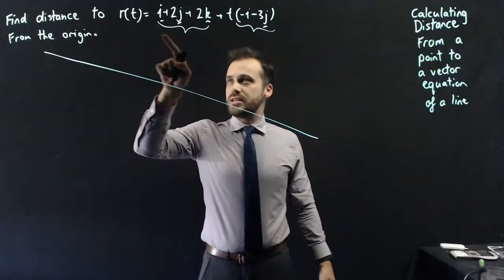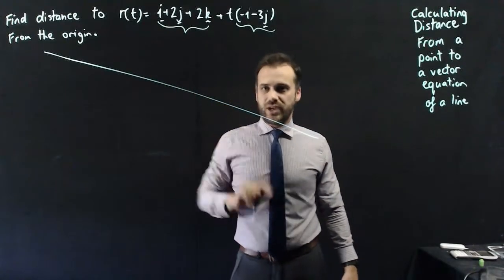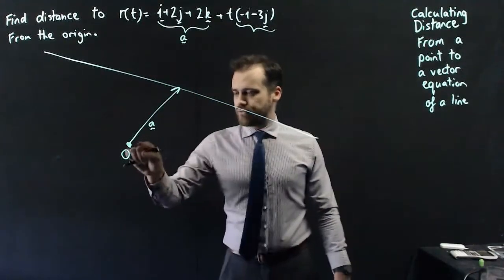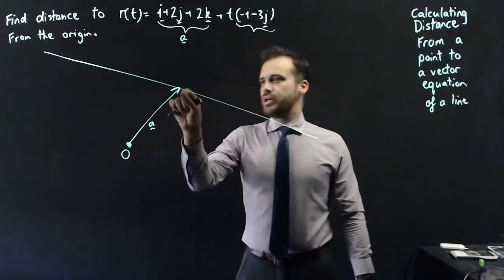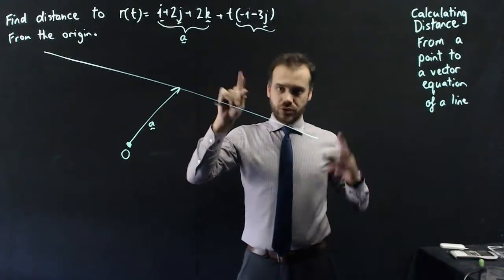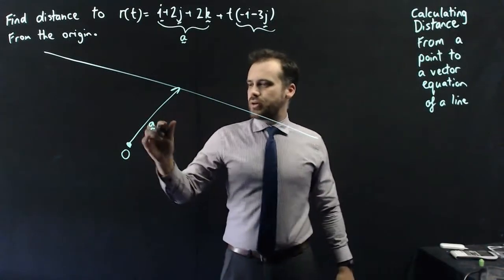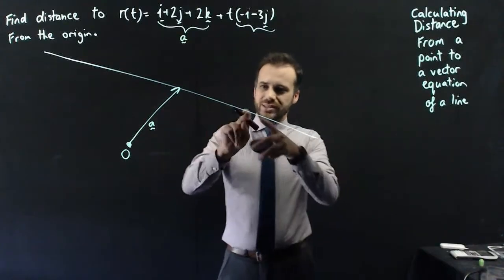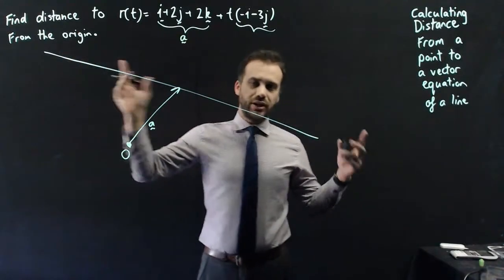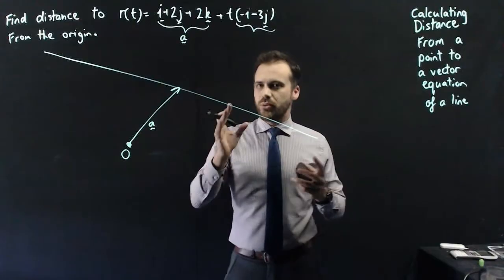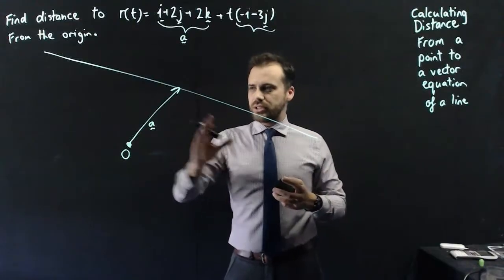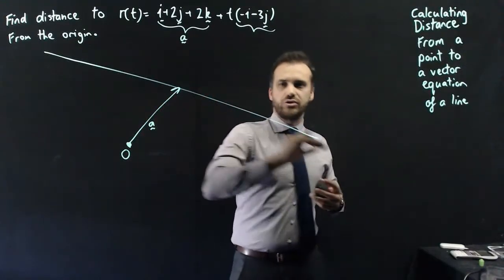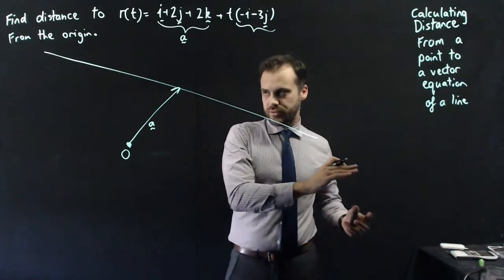This is the starting position vector. The starting position vector is a vector drawn from the origin to the line. You need to understand that the vector equation of a line is not actually a physical line — what it actually is, is an infinite number of vectors drawn to that line.